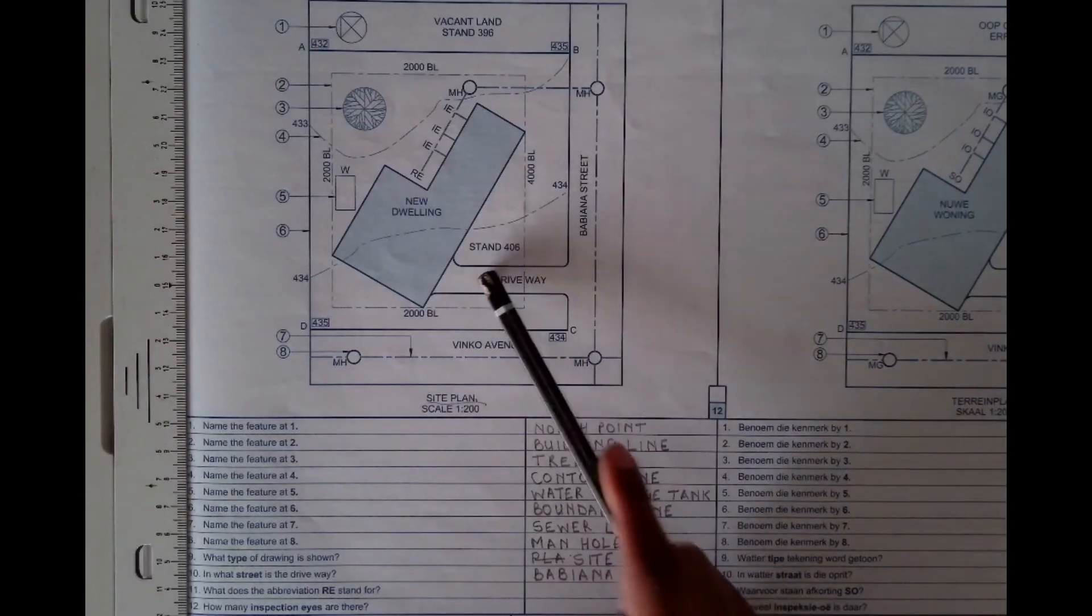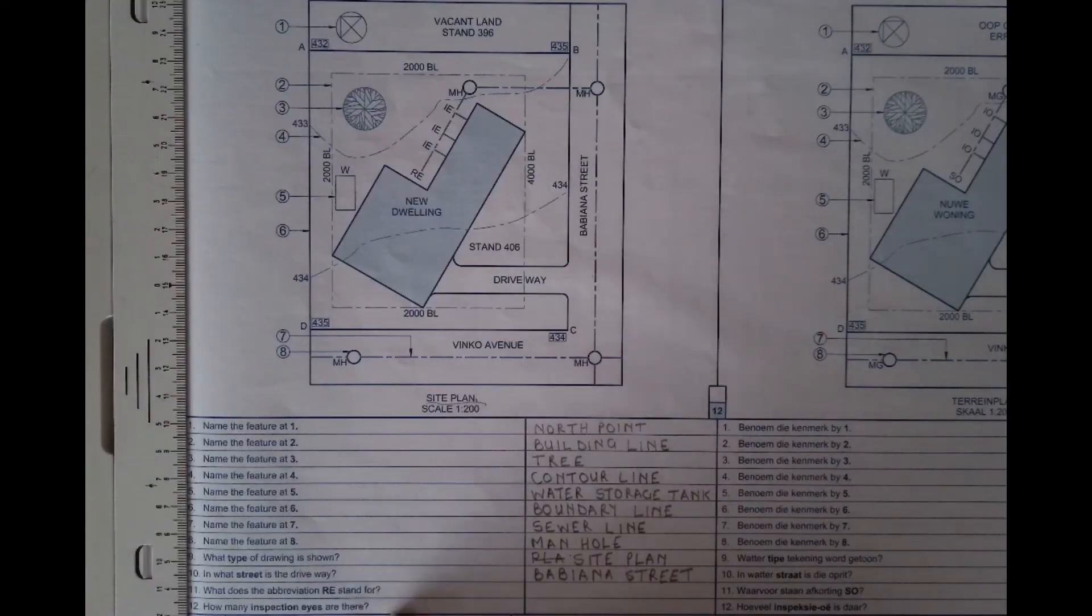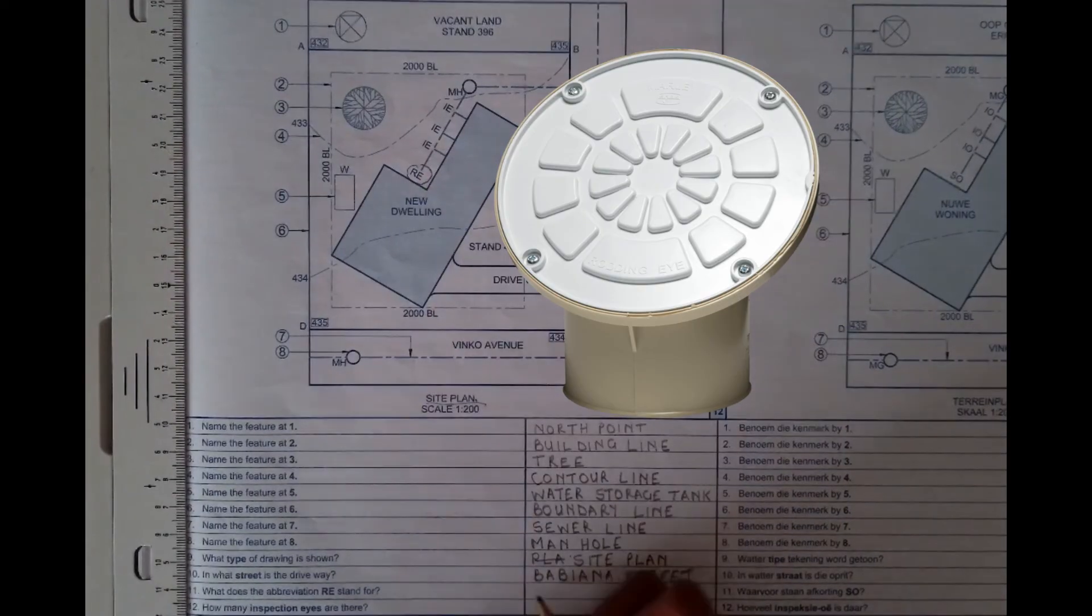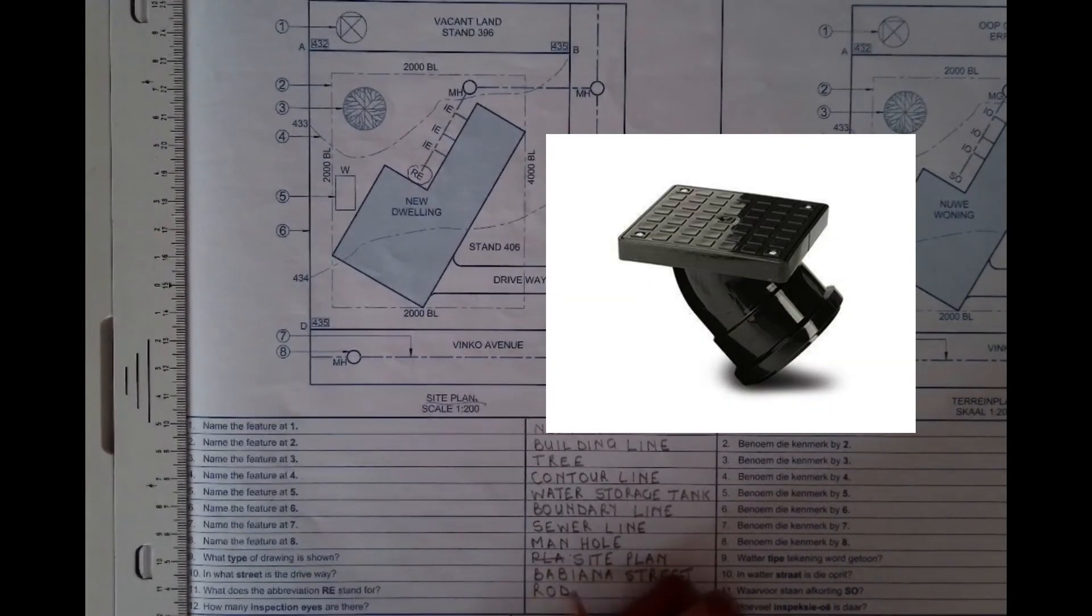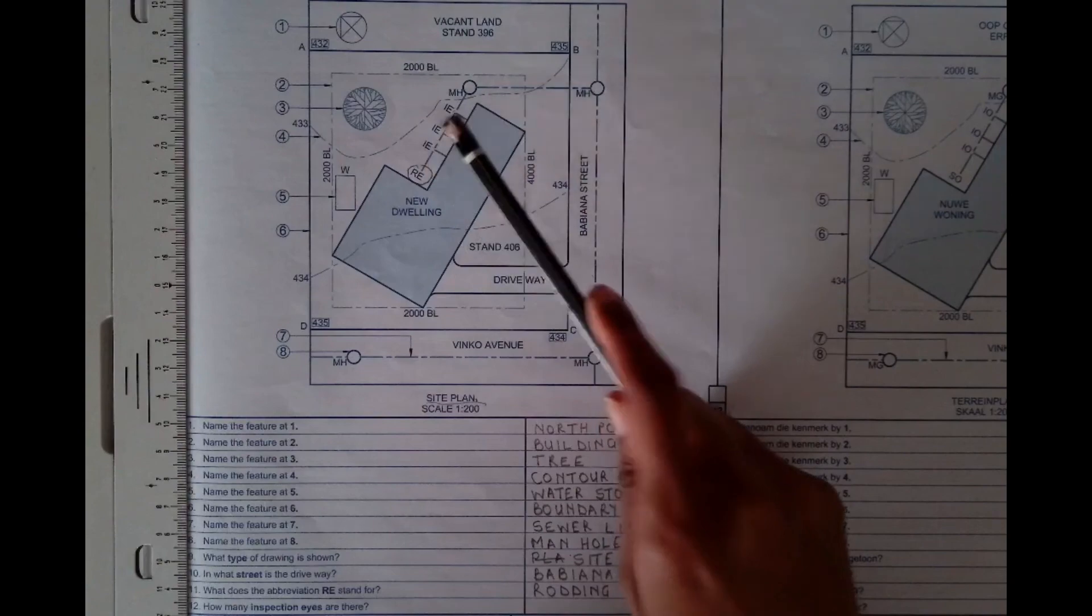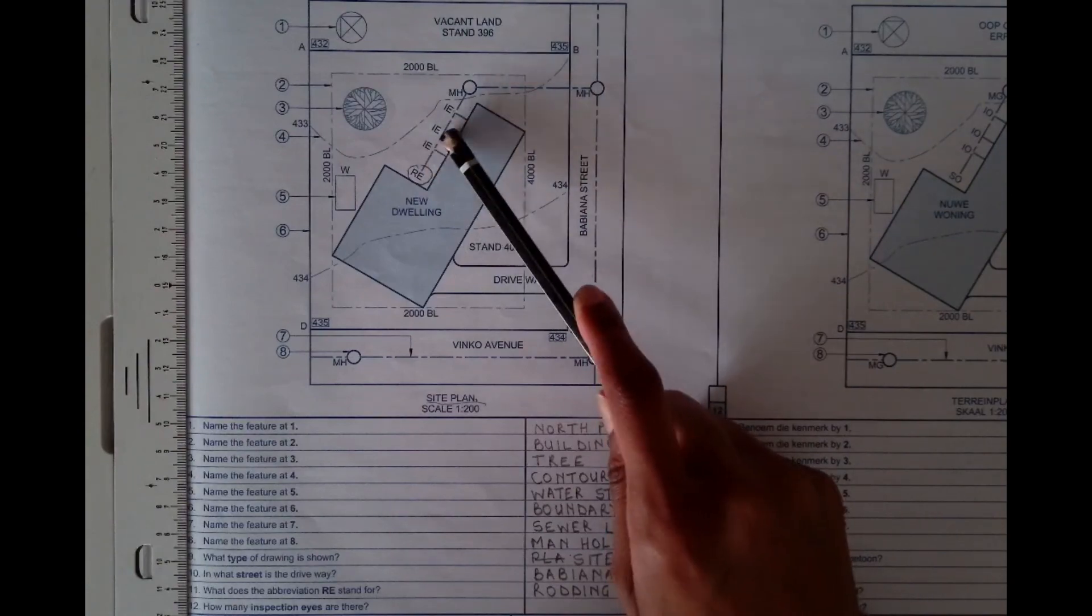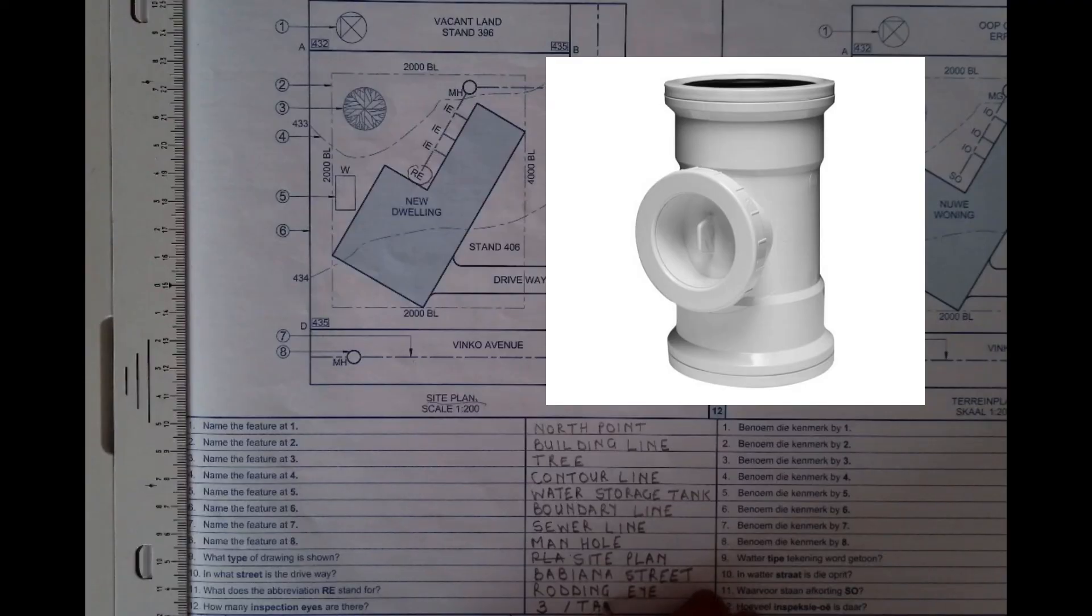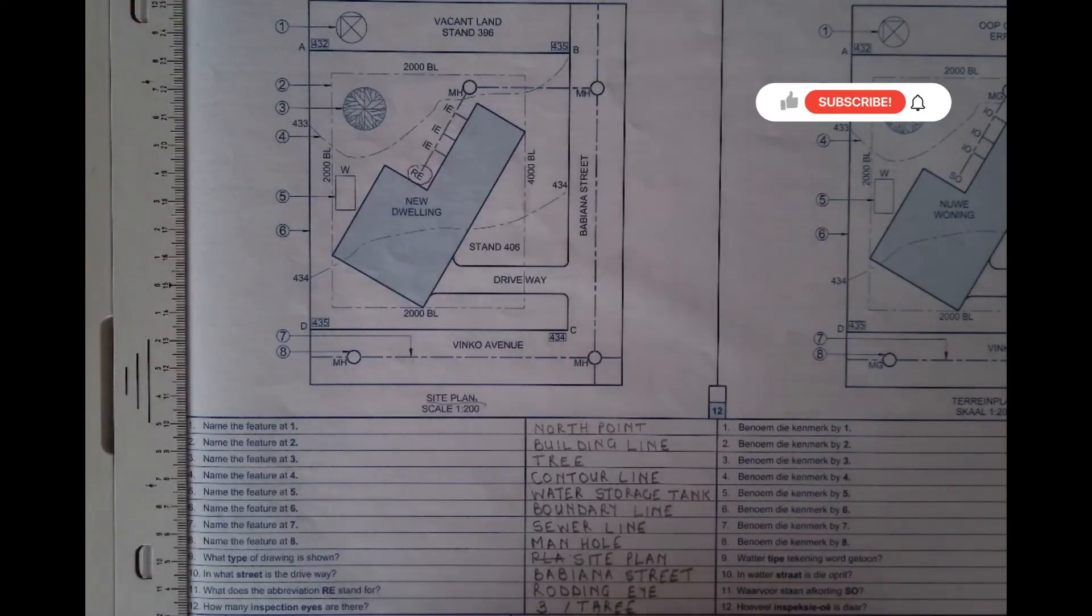So you can see that is your driveway here. And then what is the abbreviation RE? This RE here. What does it stand for? It stands for roading eye. And then how many inspection eyes are there? You have one, two and three. So IE stands for inspection eye. Meaning that you have three or you can write it in words and just say three like that. So this is H just in case you can't see.